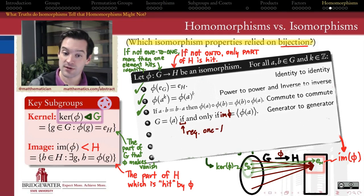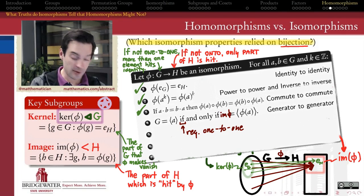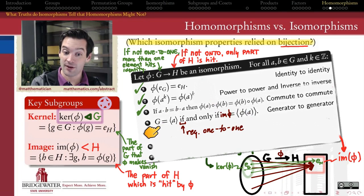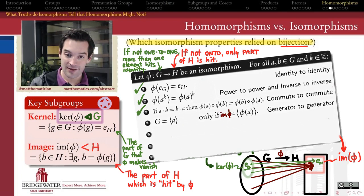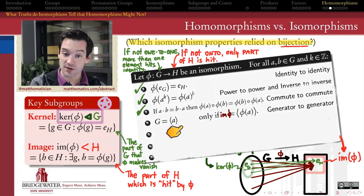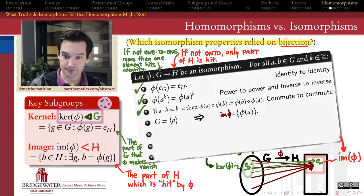Only one of those directions is going to remain true. The other direction is going to require one-to-oneness. We're not going to be able to go backwards to say that the image of phi is cyclic and generated by phi of A implies the original group is generated by A — that's only going to be true if our function is one-to-one. So we can say with certainty that if G is a cyclic group, then the image of G under this homomorphism is going to be a cyclic subgroup of H. That's the best we can do here, but it's still something.